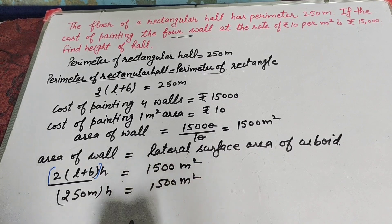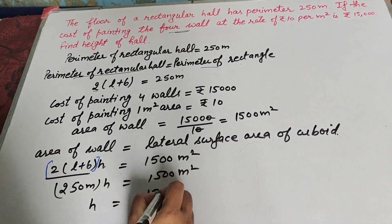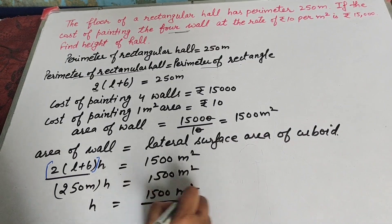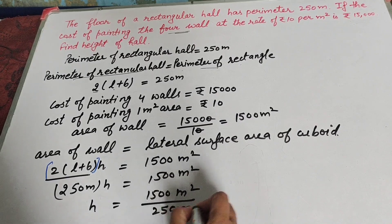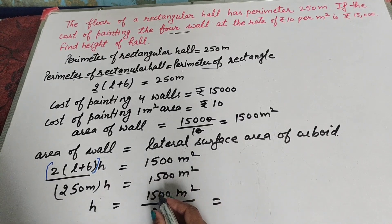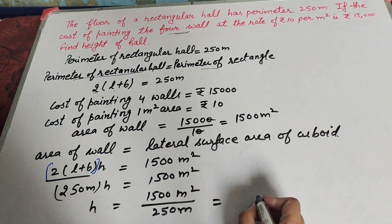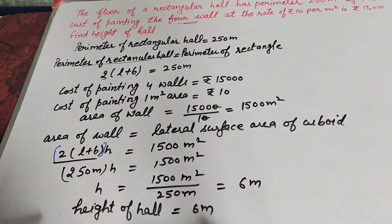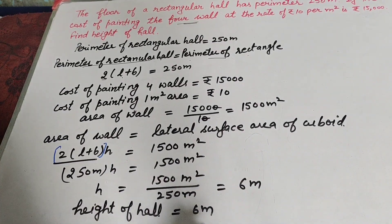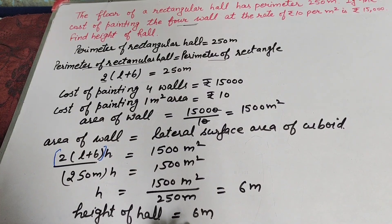The lateral surface area of a cuboid equals 2(l + b) into h, which equals 1500 meter square. So h equals 1500 divided by 250, which is equal to 6 meters. Therefore, the height of the hall equals 6 meters. Thanks for watching — like, comment, and share my video, and subscribe to my YouTube channel.